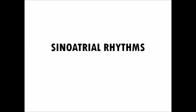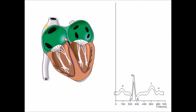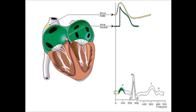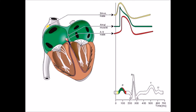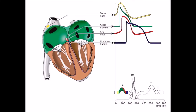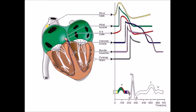Hello and welcome to the basic cardiac telemetry series. Today we'll talk about sinoatrial rhythms. To make sense of an EKG, these are the structures to remember: the sinoatrial node, the AV junction, bundle branches, and Purkinje fibers.